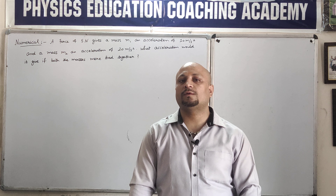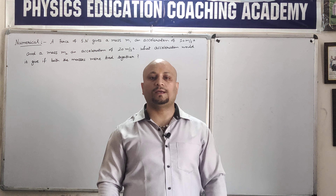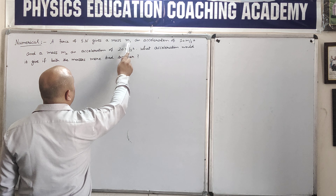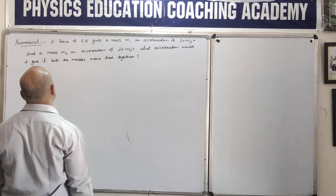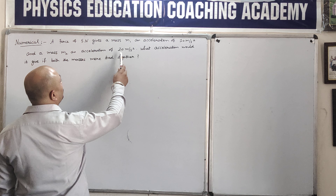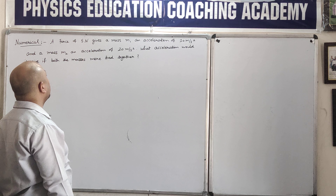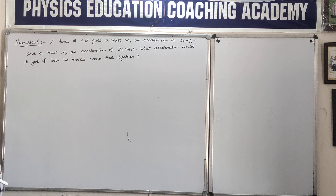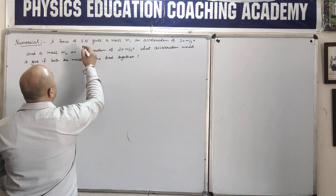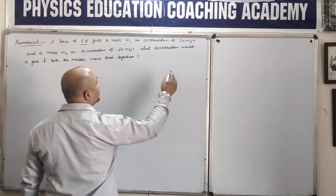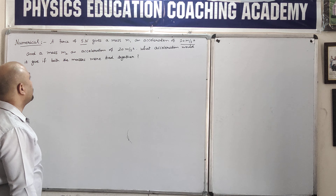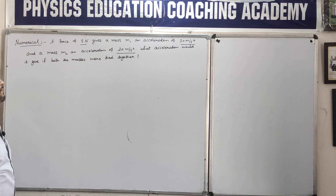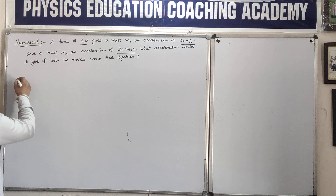This numerical is based on the concept of Newton's Second Law of Motion. The numerical is: a force of 5 Newton gives a mass M1 an acceleration of 10 meters per second square, and a mass M2 an acceleration of 20 meters per second square. What acceleration would it give if both the masses were tied together?